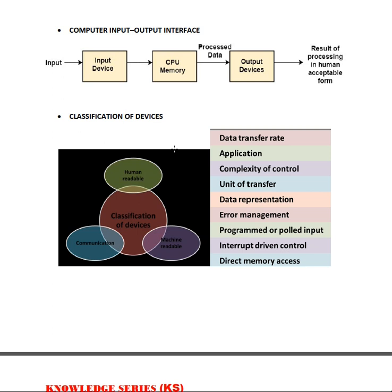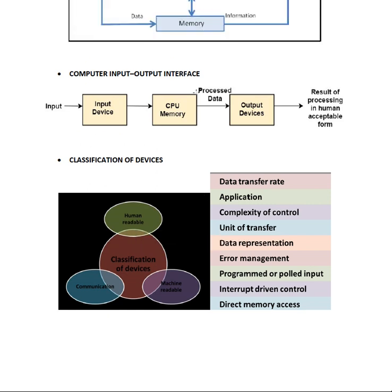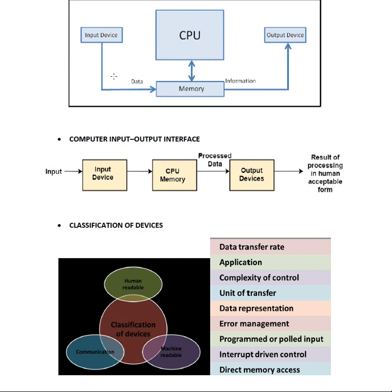Now let's look at the classifications of devices. Devices are classified into human-readable forms, communication, and machine-readable. Human-readable devices include monitor, keyboard, and mouse — these interact under human perspectives and are used to communicate by users. This also includes video display terminals and printers. A video display terminal has a speed of 50 Mbps, keyboard is 10 Mbps, mouse is 50 Mbps, and a printer is about 4 Mbps. Different devices give different speeds.